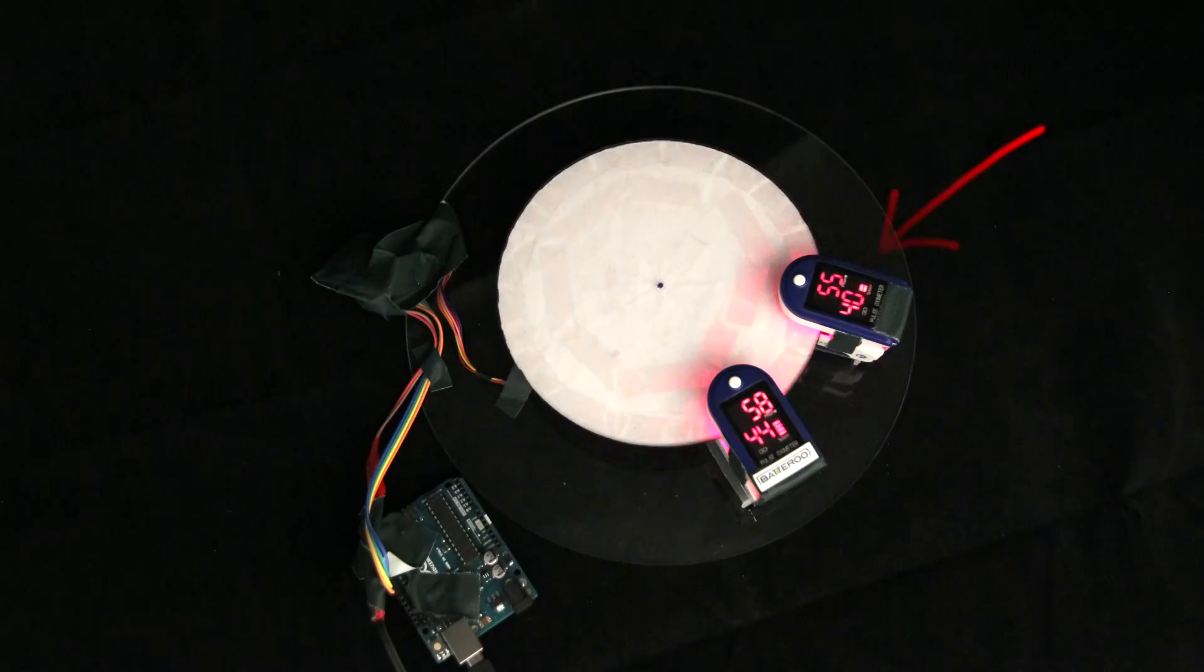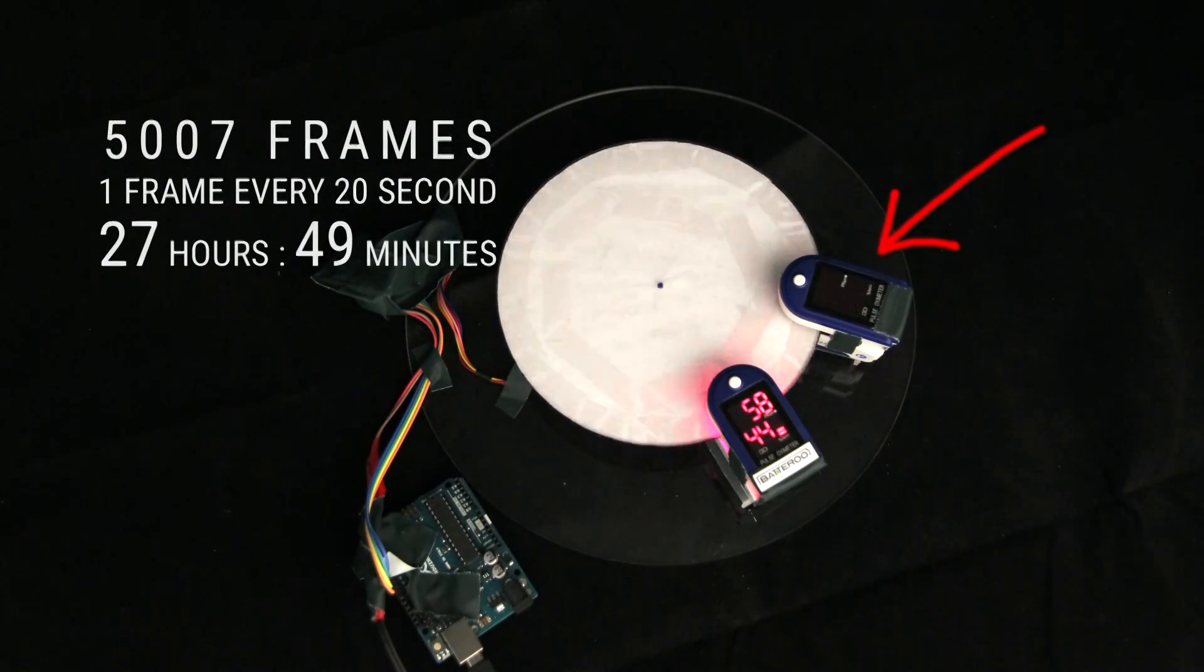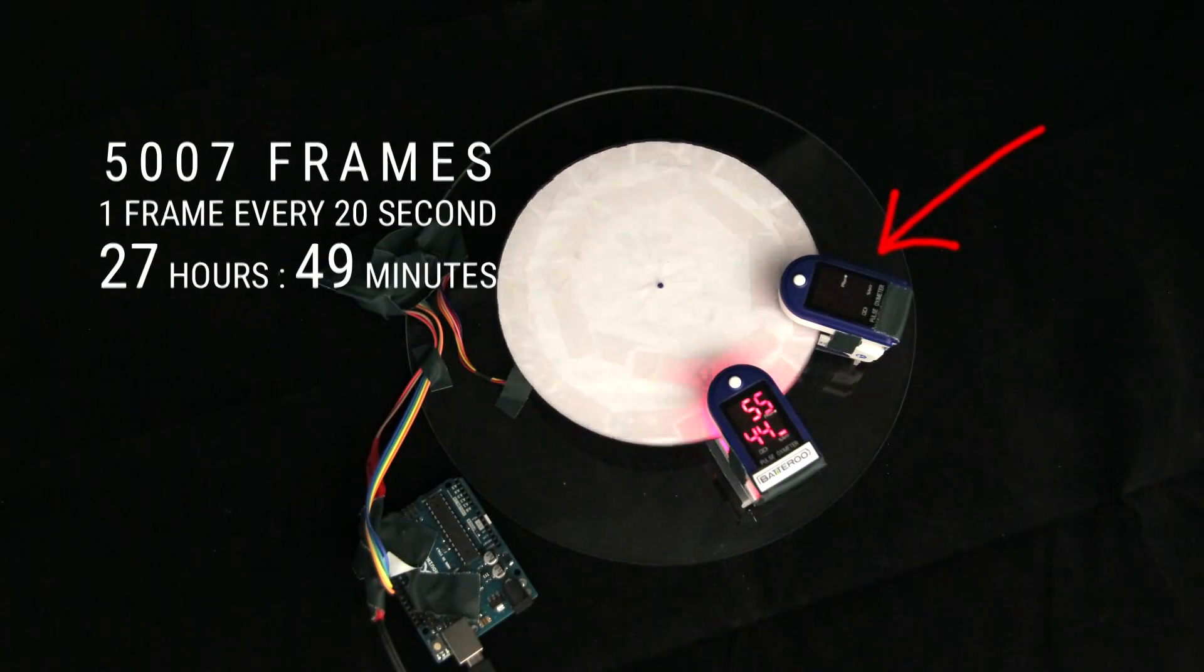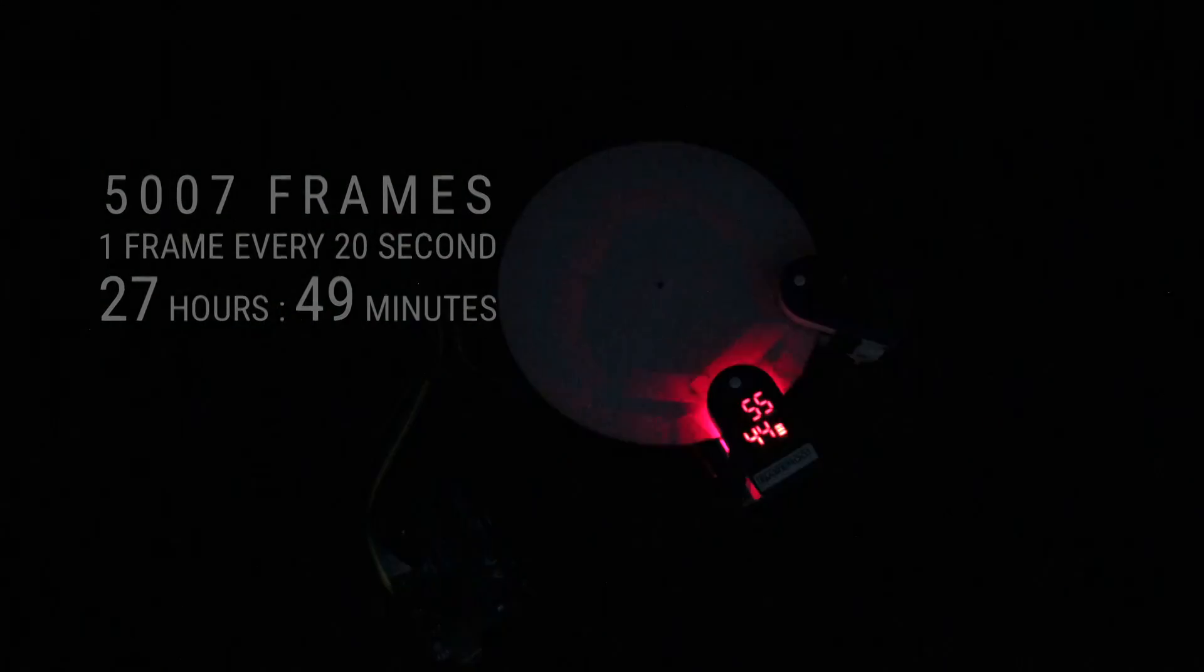The oximeter with batteries only stopped functioning after 5,007 frames, which translates into 27 hours and 49 minutes.